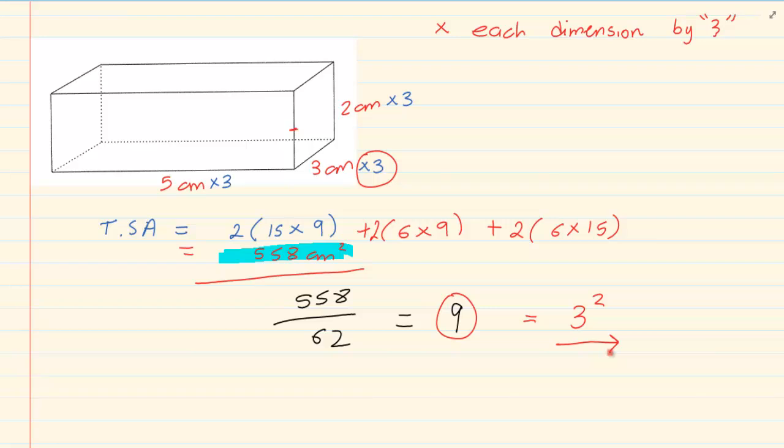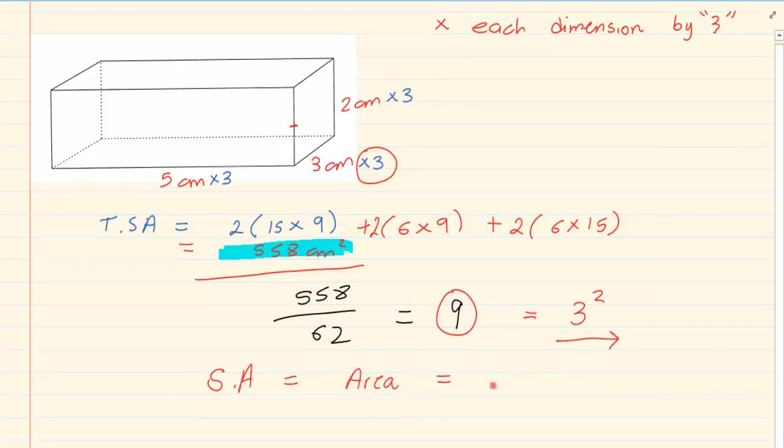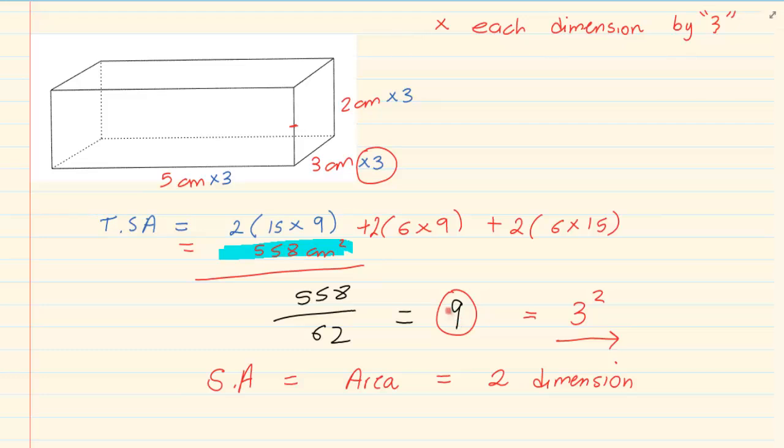What happens is when we are working with surface area, or more correctly when we are working with area, we are working in a 2 dimension figure. So we are only using 2 dimensions. We are using length and breadth at all times. So either you are only using the square or you are only using the rectangle at the bottom or you are only using the rectangle on the top. But you are only using 2 dimensions at a time. So what happens is the adjustment is also only 2 dimensions.